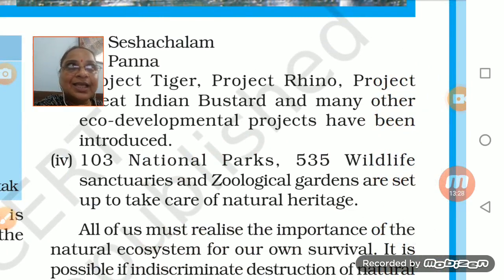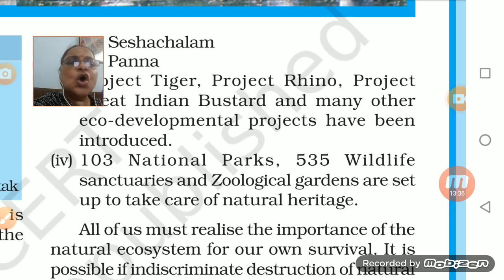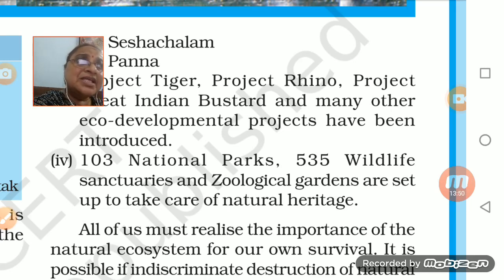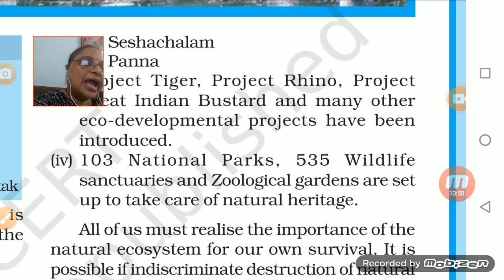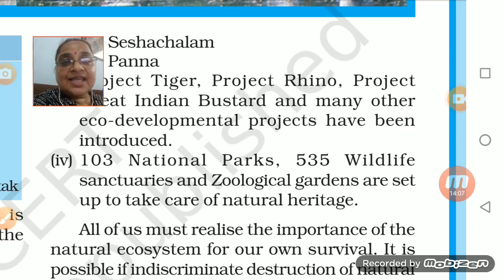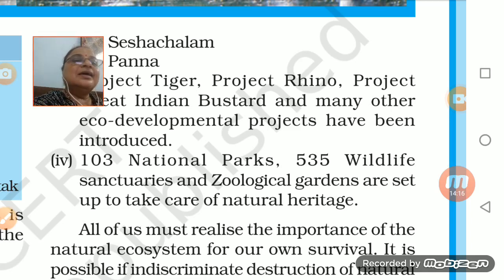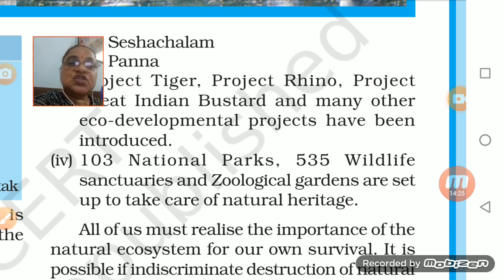Project Tiger, Project Rhino - if anybody has killed these animals or played with their safety, they are dealt with very strictly. Project Great Indian Bustard and many other eco-developmental projects - the government keeps on taking these up. If these animals go extinct or something wrong happens to them, it is a disbalance in the ecosystem. To maintain balance in the ecosystem, protection of all animals is very necessary.